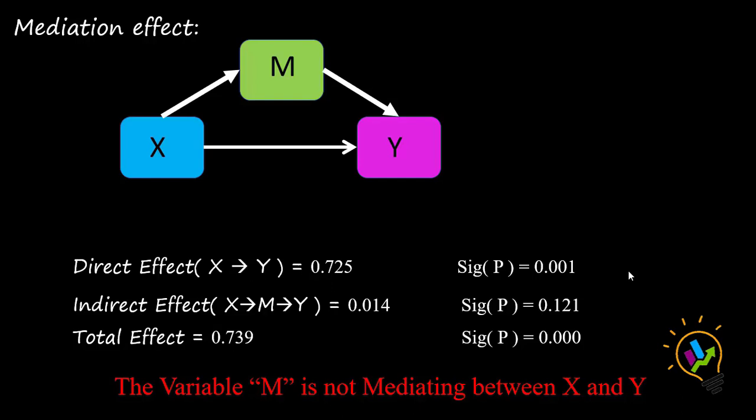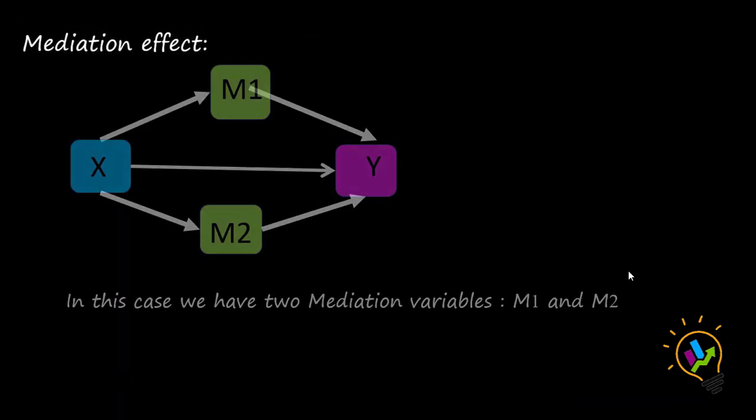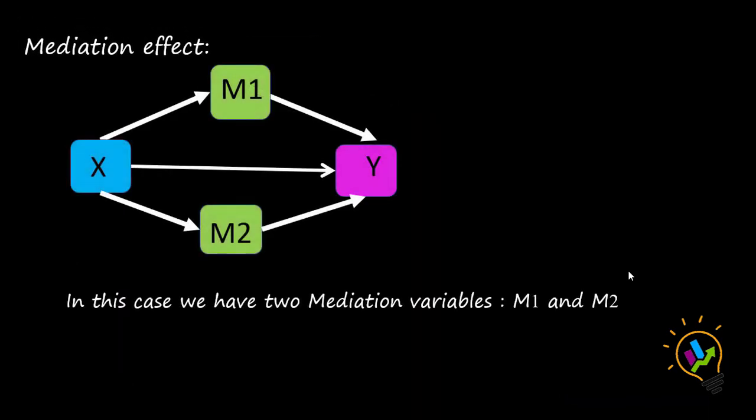We can conclude that the mediation variable M is not mediating significantly between X and Y, because the p-value of the indirect effect is 0.121, which is not significant. Now let us take another type of model where we have one more mediation variable — that is, M1 as the first mediation variable and M2 as the second mediation variable. In this case, we have two mediation variables, M1 and M2.